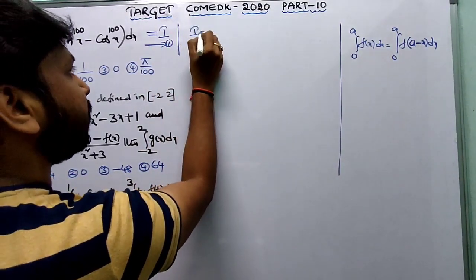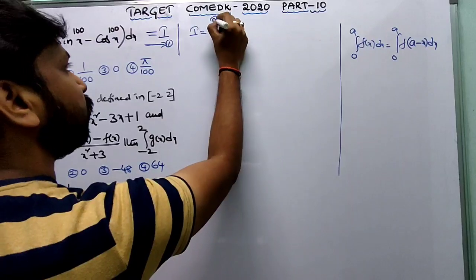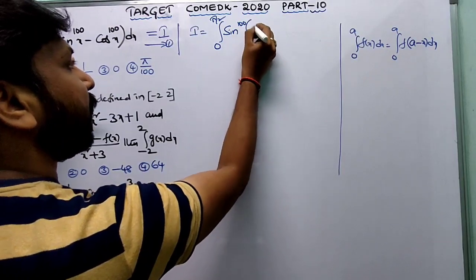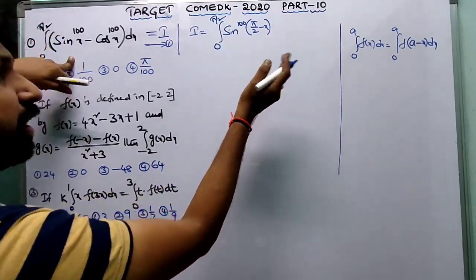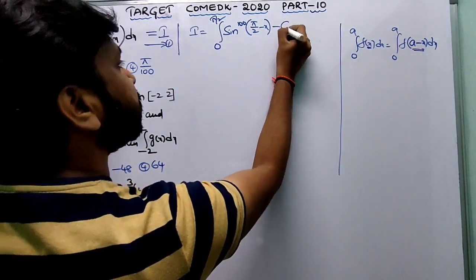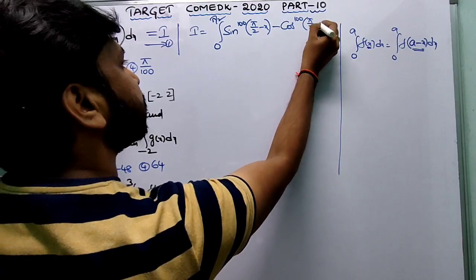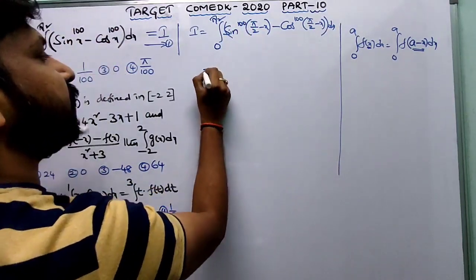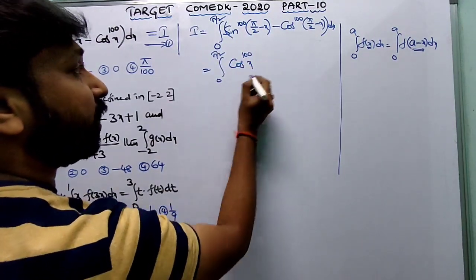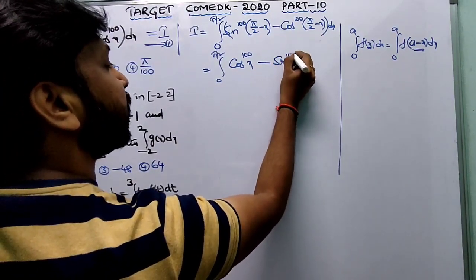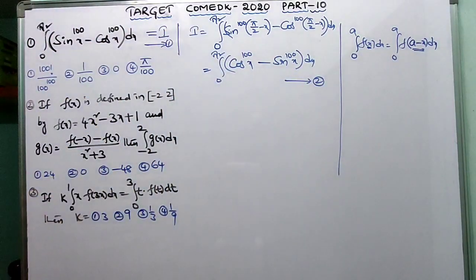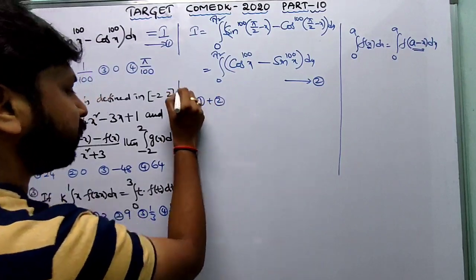Applying the property, I becomes integral from 0 to π/2, substituting (π/2 minus x) wherever x appears: sin¹⁰⁰(π/2 minus x) minus cos¹⁰⁰(π/2 minus x) dx. Since sin(90° minus x) = cos x and cos(90° minus x) = sin x, this becomes integral from 0 to π/2 of (cos¹⁰⁰x minus sin¹⁰⁰x) dx — call this equation 2.